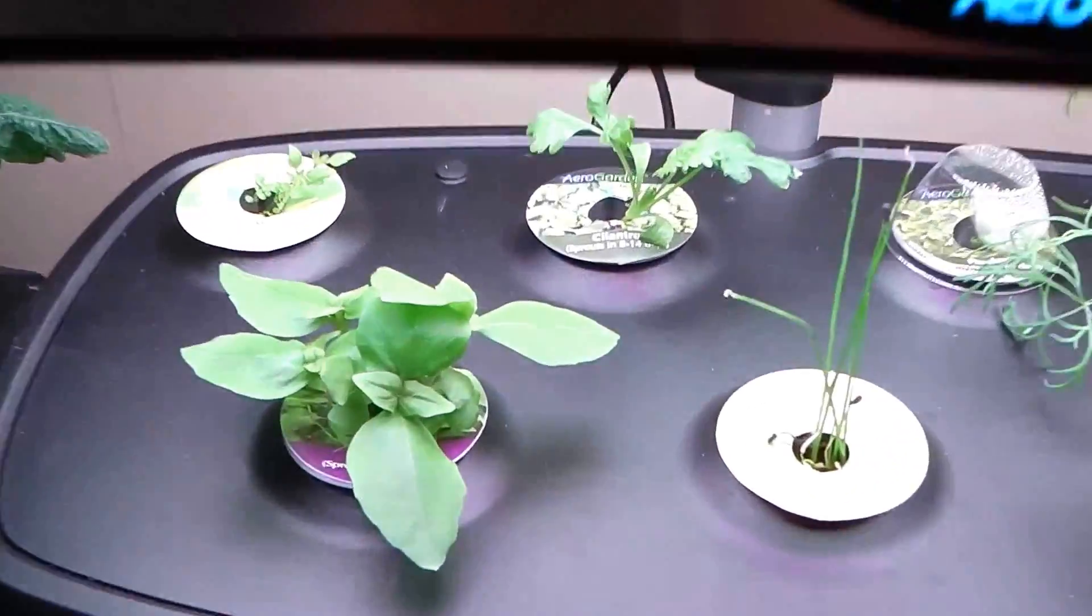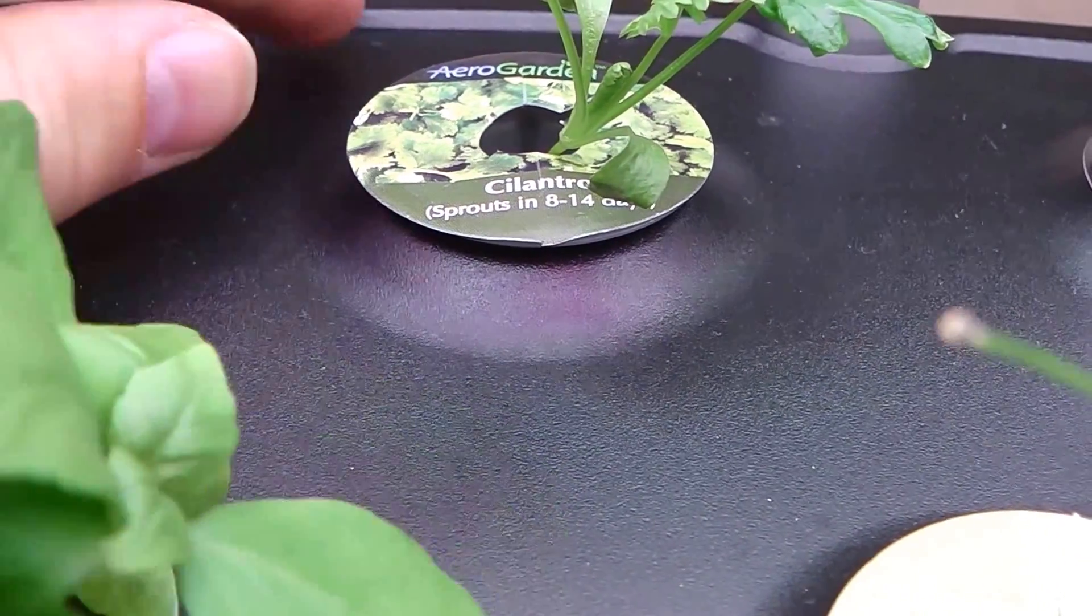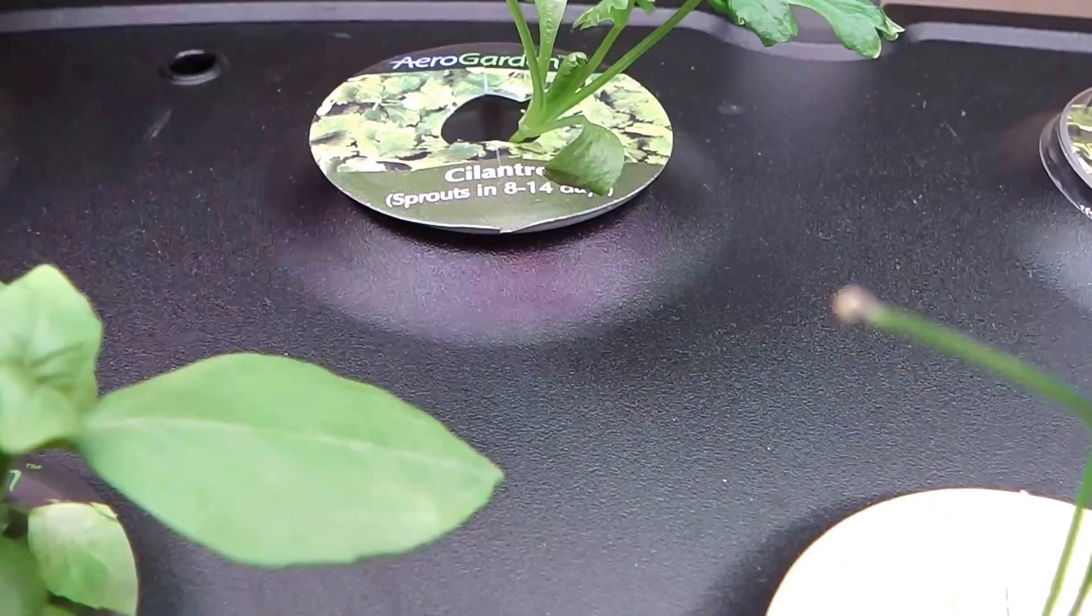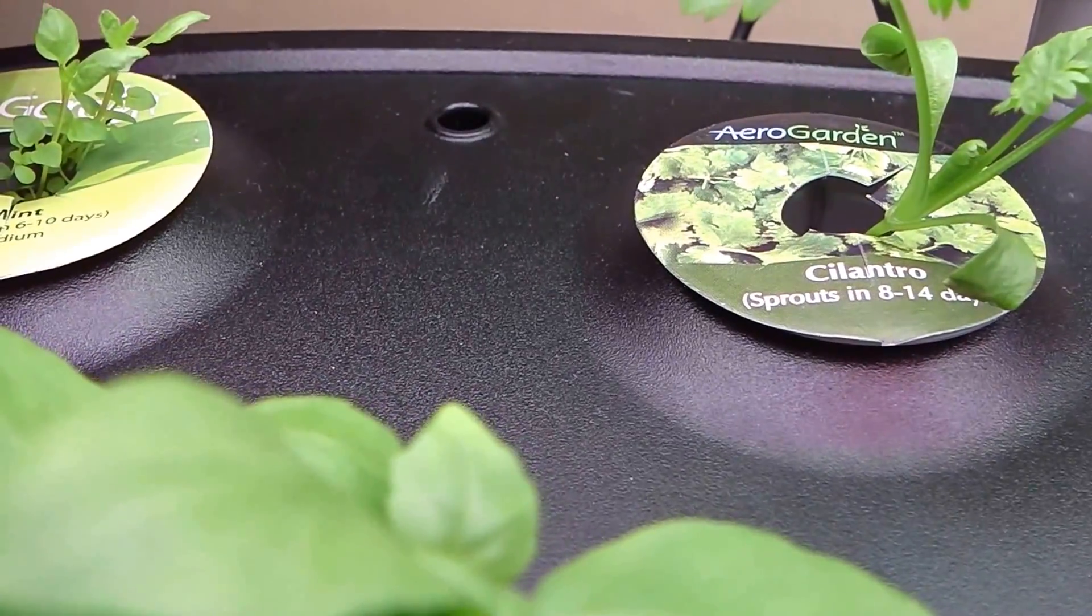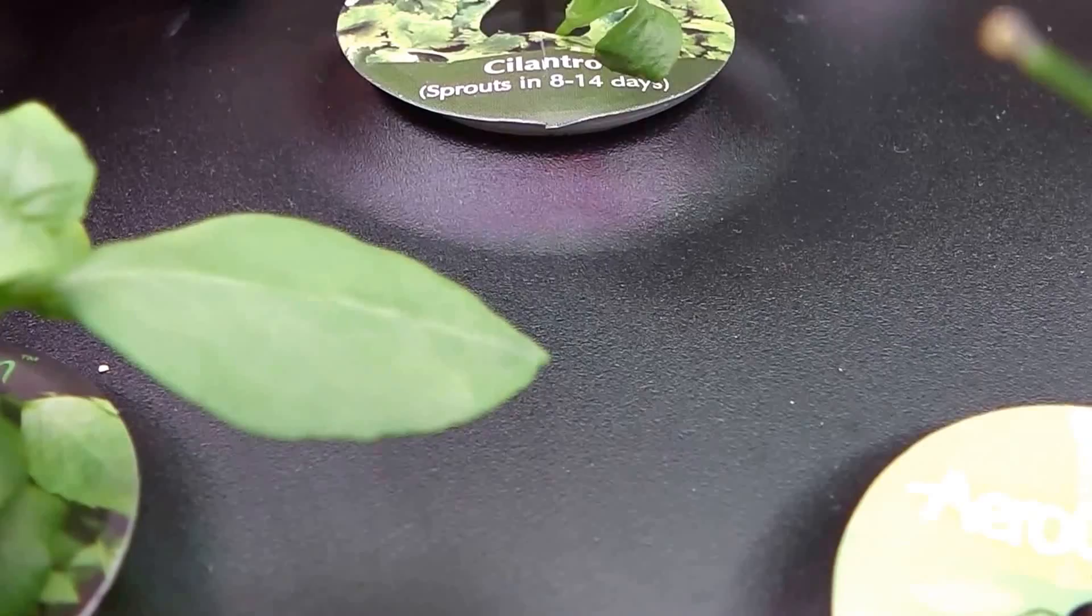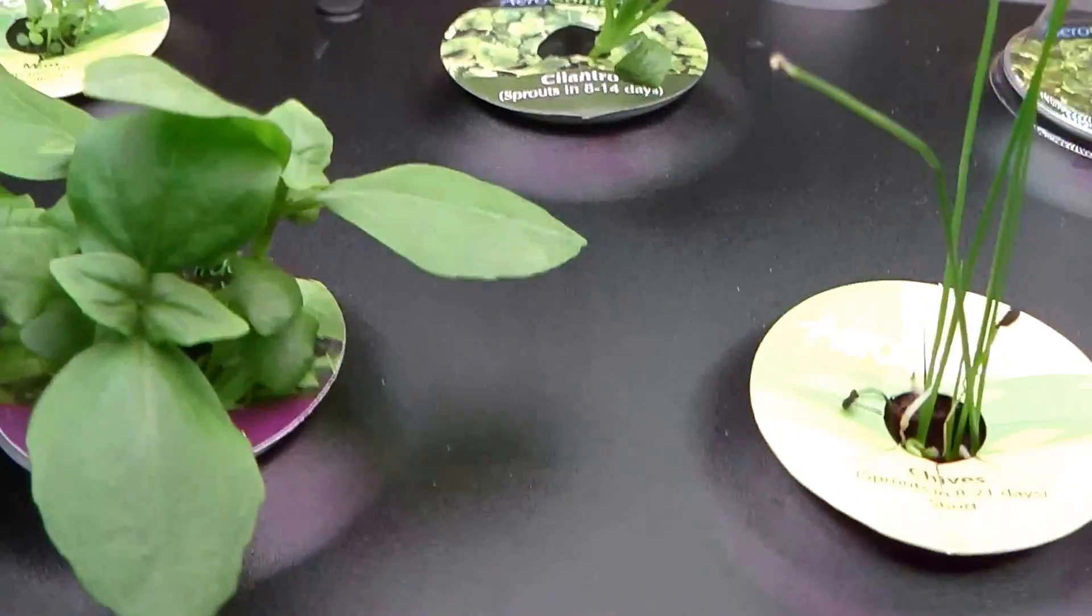If you look at the units, they have little holes with a little plug. And that plug is the exact size of an airline. So what that allows you to do is to put an air stone and an airline into your reservoir.